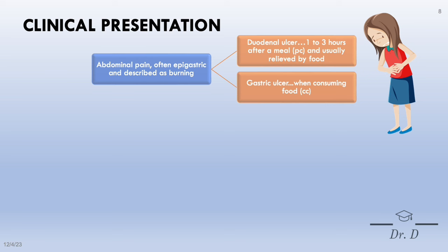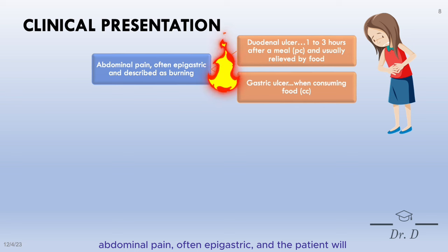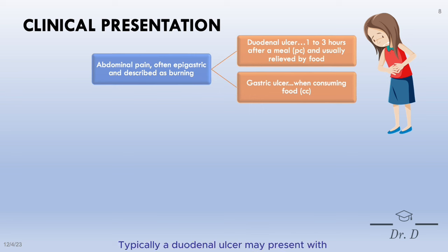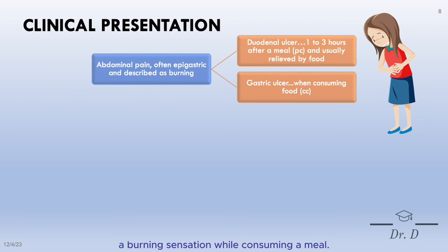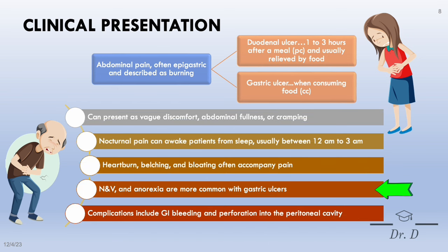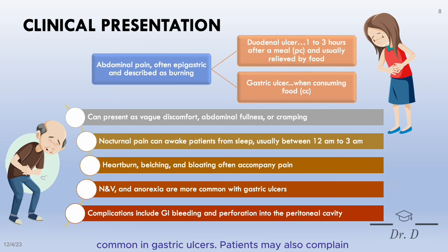Peptic ulcer disease clinically presents with abdominal pain, often epigastric, which the patient describes as a burning sensation. A gastric ulcer may present with a burning sensation while consuming a meal. Nausea, vomiting, and anorexia are also more common in gastric ulcers. The patient may also complain of abdominal fullness, cramping, heartburn, belching, and bloating.